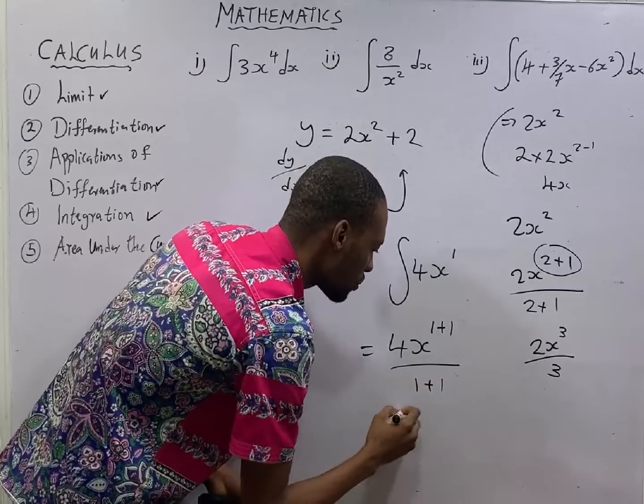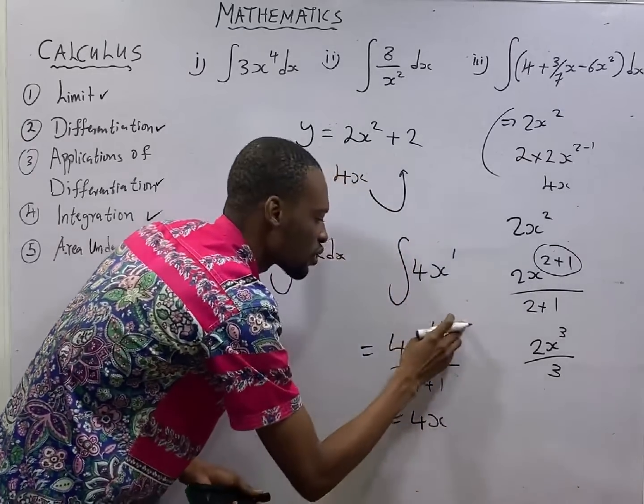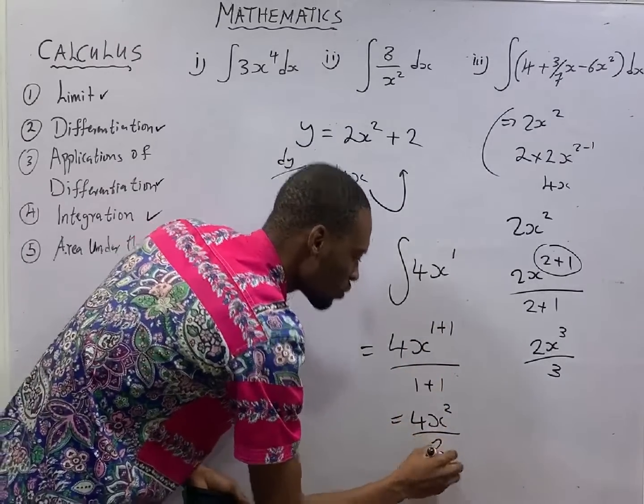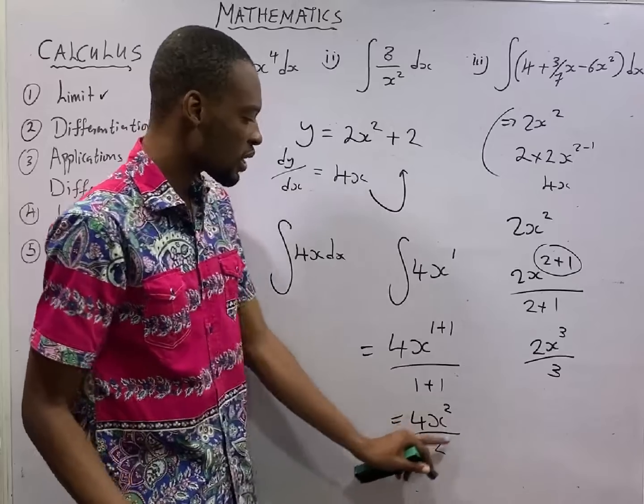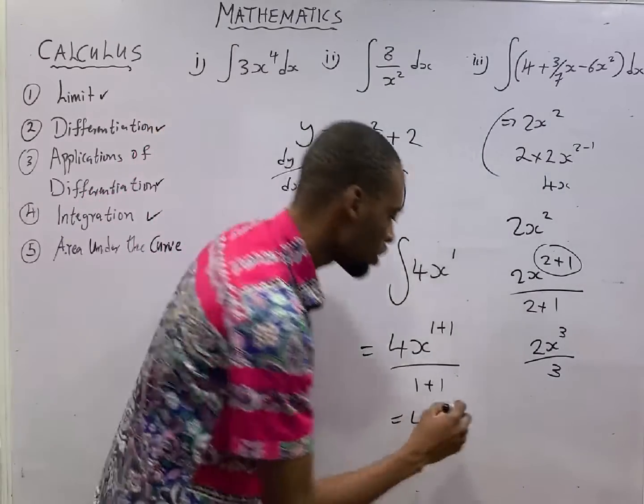1 plus 1. And this will give you 4x raised to the power, 1 plus 1 is 2. Divide by 1 plus 1 is 2. That is 4x raised to the power of 2 over 2.